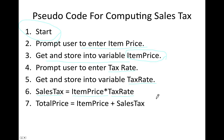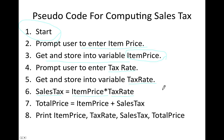By step seven we have finished all our computation and now we need to output the results. For output, we write: print itemPrice, taxRate, salesTax, and totalPrice. The reason we print all of these is that if you look at any purchase receipt, it will have all these pieces of information — so it's a good idea to print all of them at the end.